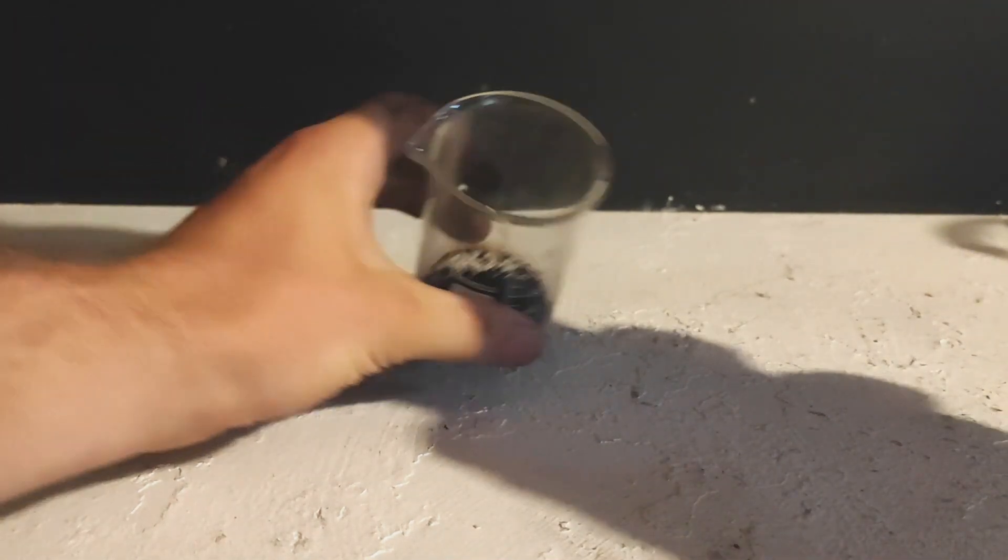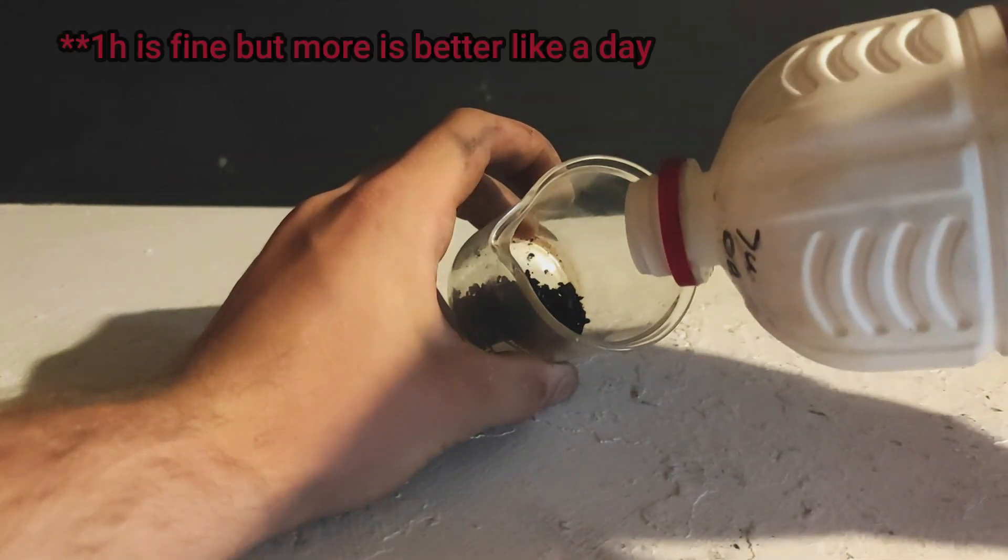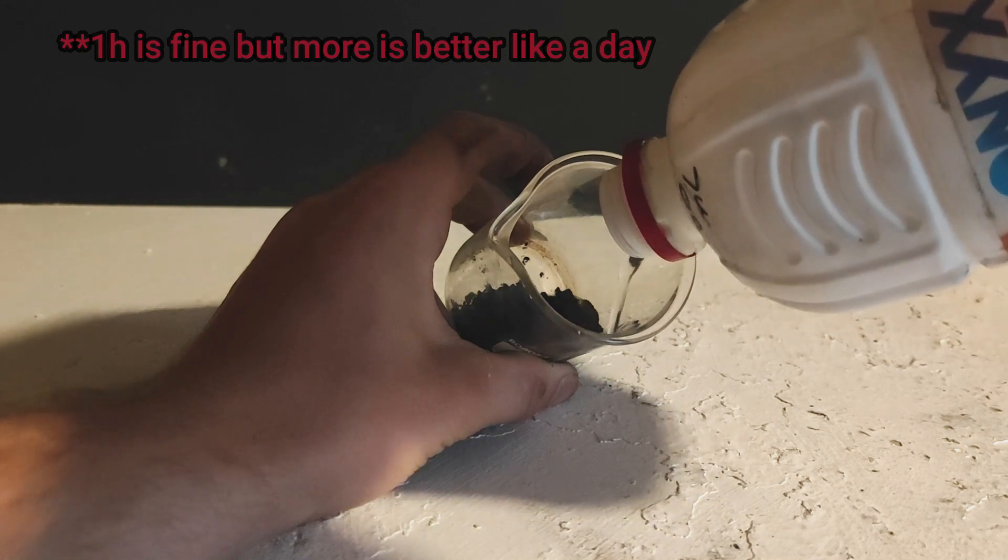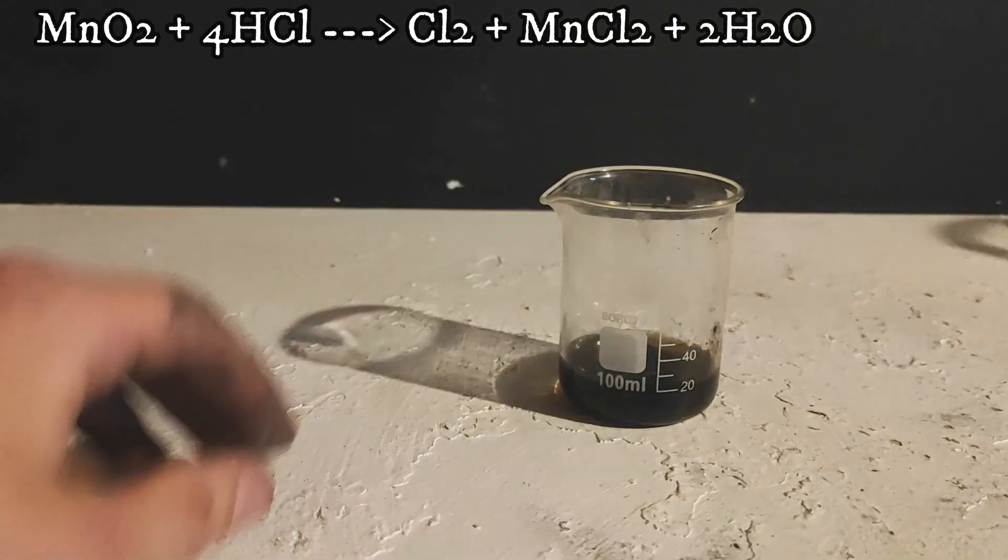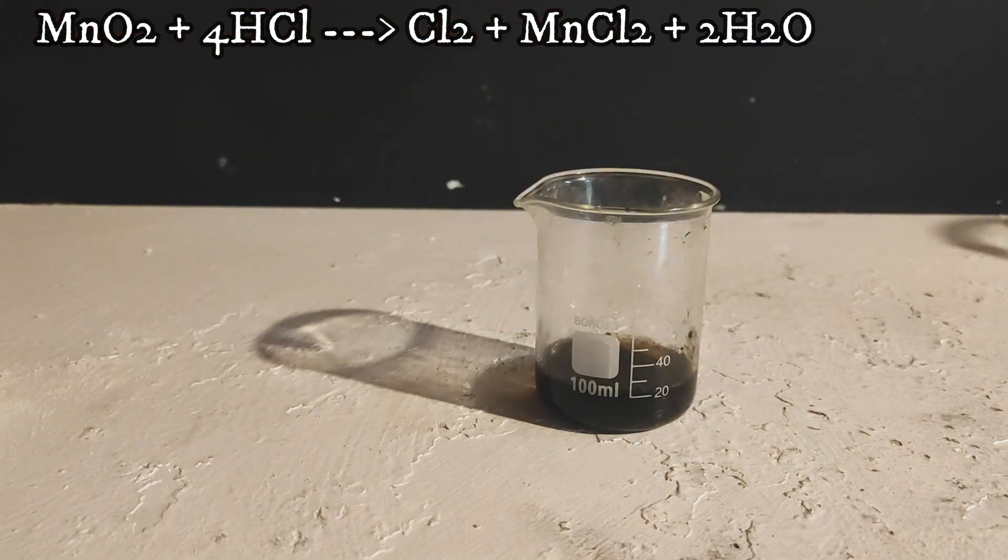The next step is to dissolve the manganese dioxide in hydrochloric acid and let it react for at least an hour. Beware that this reaction generates dangerous chlorine gas according to this equation. So do this in a well-ventilated area, or stay far from it when it reacts.